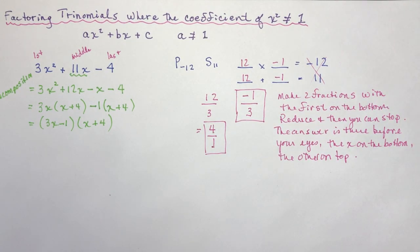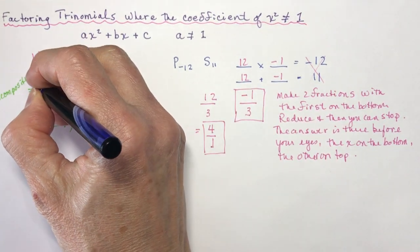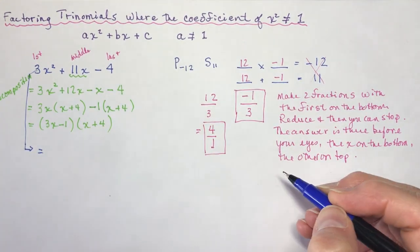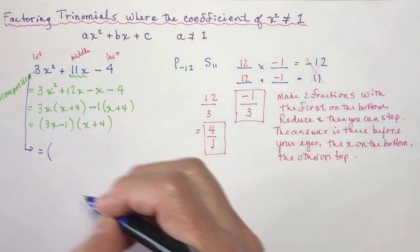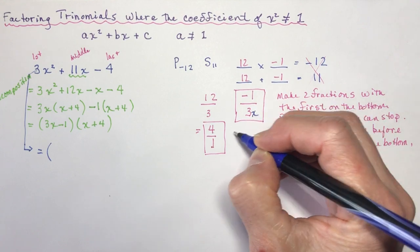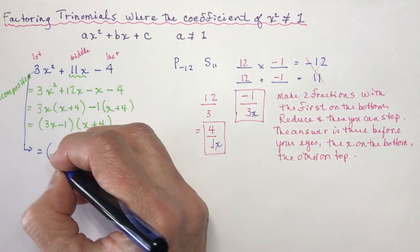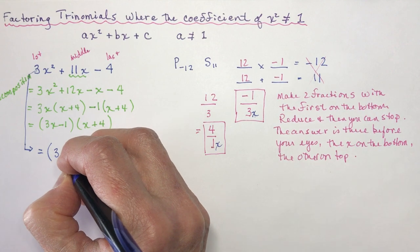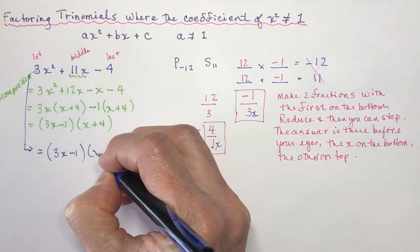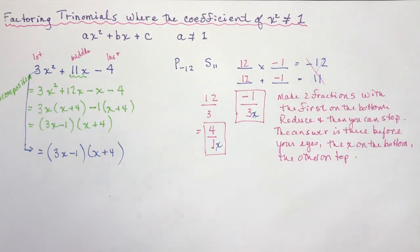So you can go right from here directly — do not pass go, do not collect $200 — and write out your factors: 3x minus 1 times x plus 4. The x on the bottom, the other on top, and I get my factors 3x minus 1 times x plus 4. And I'm done. Saves all this decomposition work.